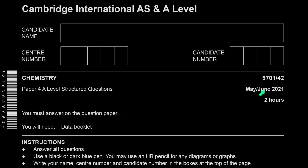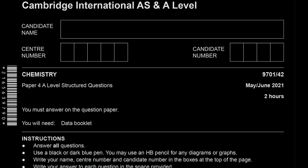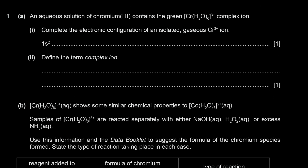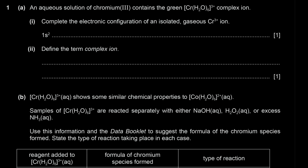Today we're solving May/June 2021 Paper 42. Question one says an aqueous solution of chromium 3 contains the green chromium 3 hexa aqua complex ion. Complete the electronic configuration of an isolated gaseous Cr3+ ion. We know that the chromium atom has an electronic configuration of: